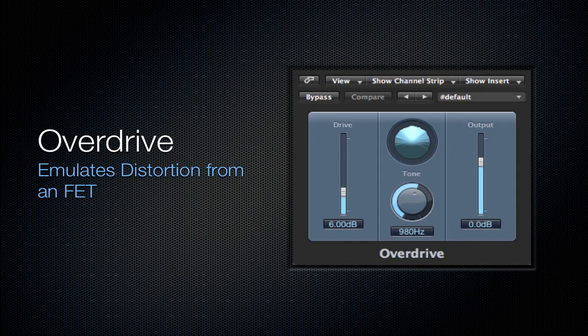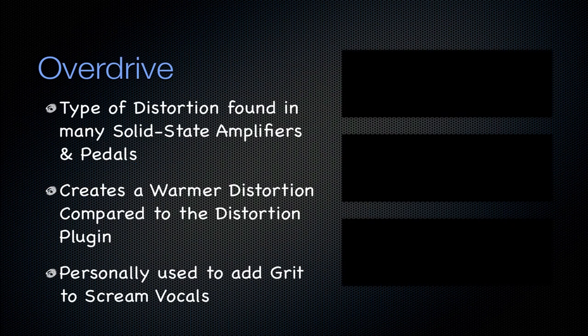Next is going to be the overdrive. Like I said, there's FET and then bipolar transistor distortion — this is going to be the FET distortion. This type of distortion is found in many solid state amplifiers and pedals. It creates a warmer distortion compared to the distortion plugin. I use it to add some grit to screaming vocals, or if I wanted to add distortion to a clean vocal signal. Play with the overdrive and the BitCrusher if you'd like.